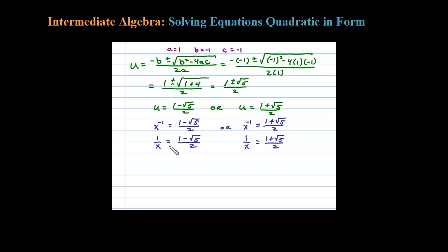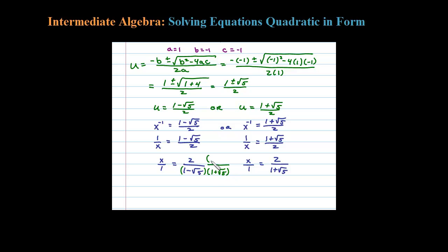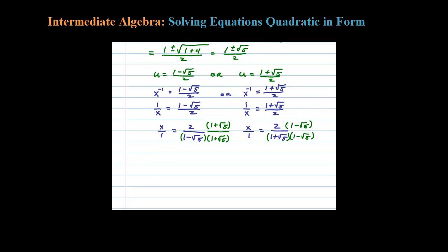At this point we could cross multiply, but here's a trick: whenever you have a fraction equal to a fraction, you can reciprocate both sides. So x equals 2 over 1 minus √5, or x equals 2 over 1 plus √5. The answers in the book are probably rationalized — you can't have radicals in the denominator — so we'll multiply numerator and denominator by the conjugate: 1 plus √5 for the first, and 1 minus √5 for the second.